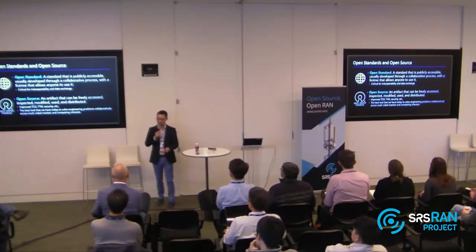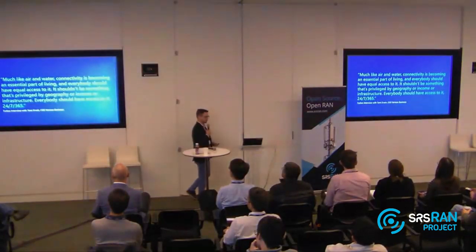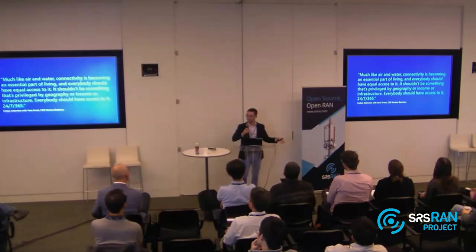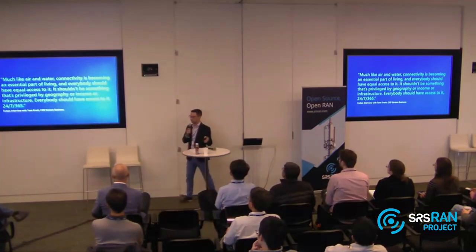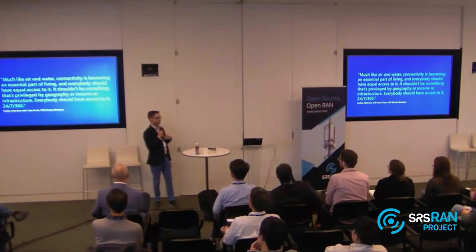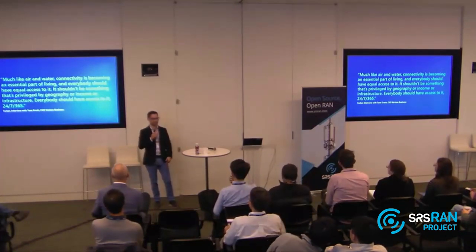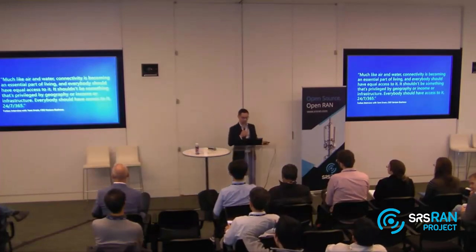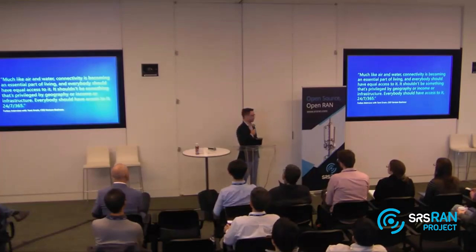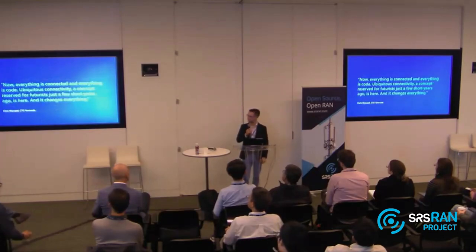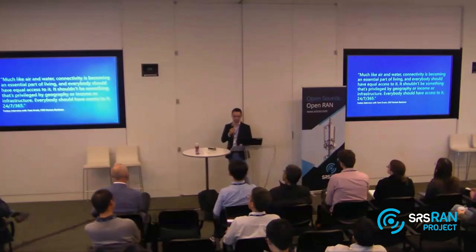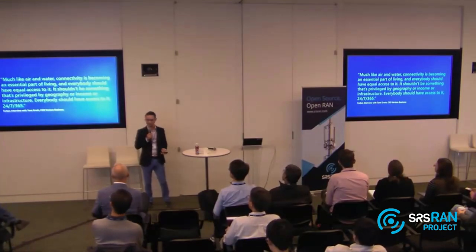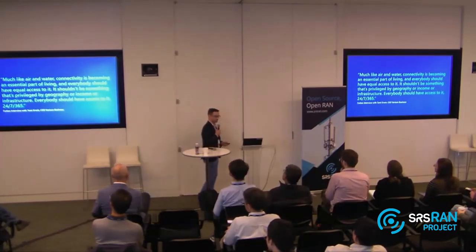Now I want to shift context and talk about ubiquitous computing. I'll assume everybody in the audience is already on board with it. Everybody should have access to compute — access to compute and connectivity is a fundamental part of growth and success. In the U.S., there's a huge conversation over the digital divide and making sure everyone has access to connectivity and the internet. This is a big deal for Microsoft and many other large tech and service provider companies. For example, the CEO of Verizon Business, in an interview with Forbes, described connectivity on the same level as air and water — effectively calling it a human right.